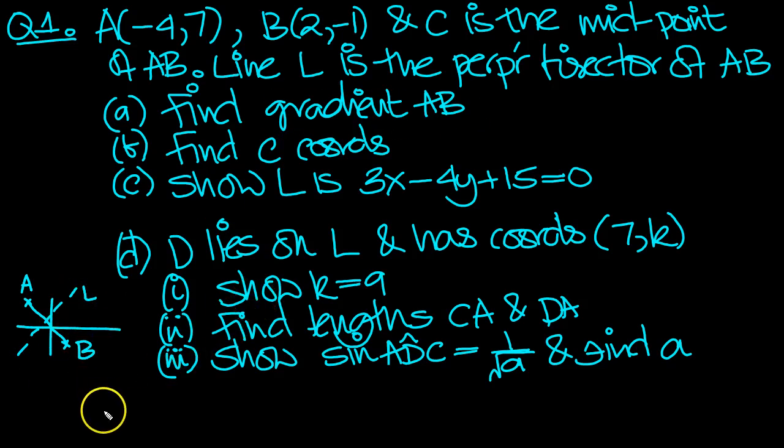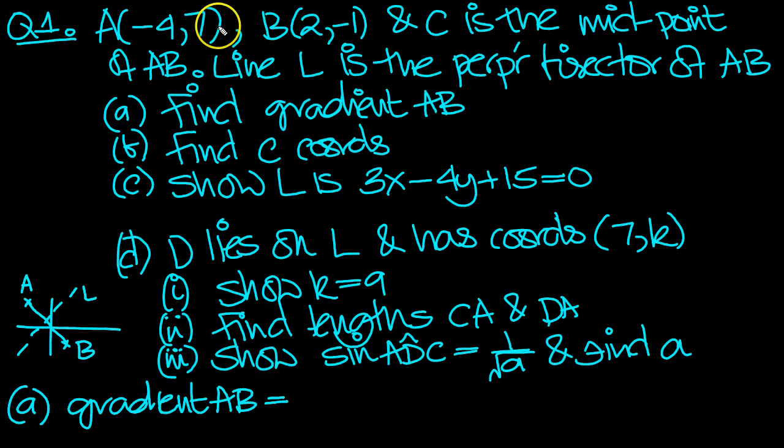Now we know that the gradient of AB is, the answer will be negative. So gradient AB. The increase in Y is 7 minus (-1), which is minus 7, minus 8.